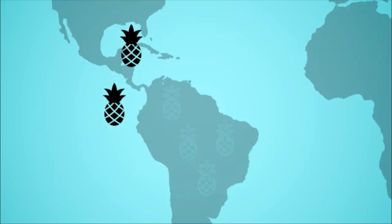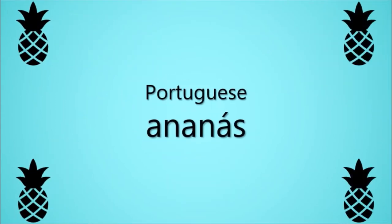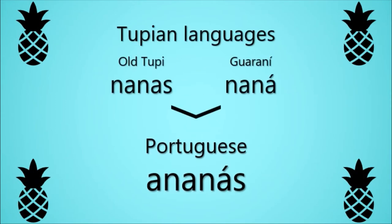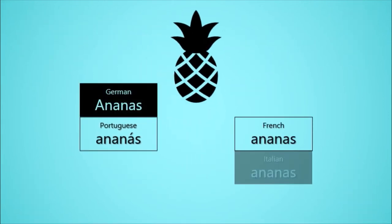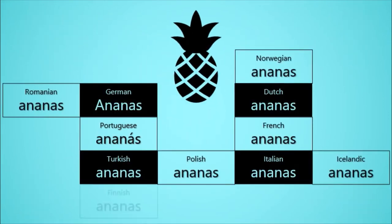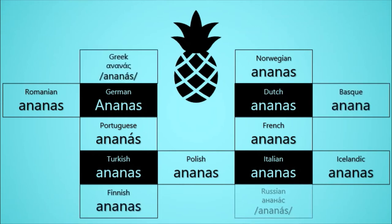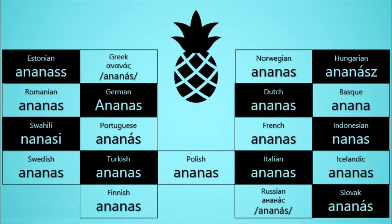The Portuguese word for pineapple was ananas, which they adopted from a Tupian language. The Tupian languages are a group of languages indigenous to South America. Since Portuguese speakers introduced the pineapple to Europe and Asia, many European and Asian languages simply kept the Portuguese word ananas, or something like it, as their word for pineapple.